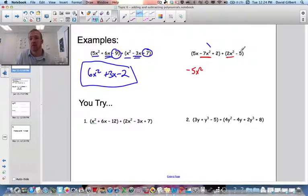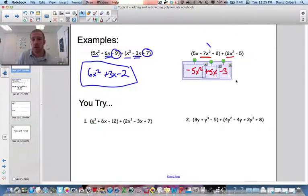This one doesn't have an x term. So we just keep that 5x because there's nothing to combine it with. And then 2 plus negative 5 is a negative 3. So that would be your final answer.